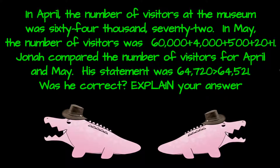Jonah compared the number of visitors from April and May. His statement was: 64,720 is greater than 64,521. Was he correct? Explain your answer.